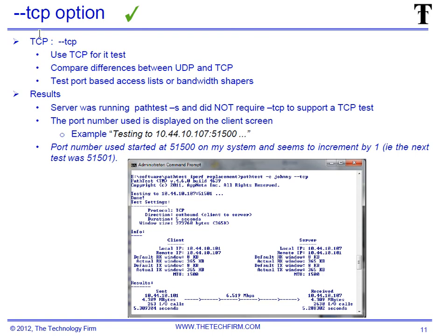The TCP option is a favorite of most of my students because in many cases you want to test for packet shaping if it's port-based, or some kind of access list or filter. This is a great way to find out if you can get through or not, and secondarily if that port number or protocol is being filtered out. You can change it to whatever port you want.